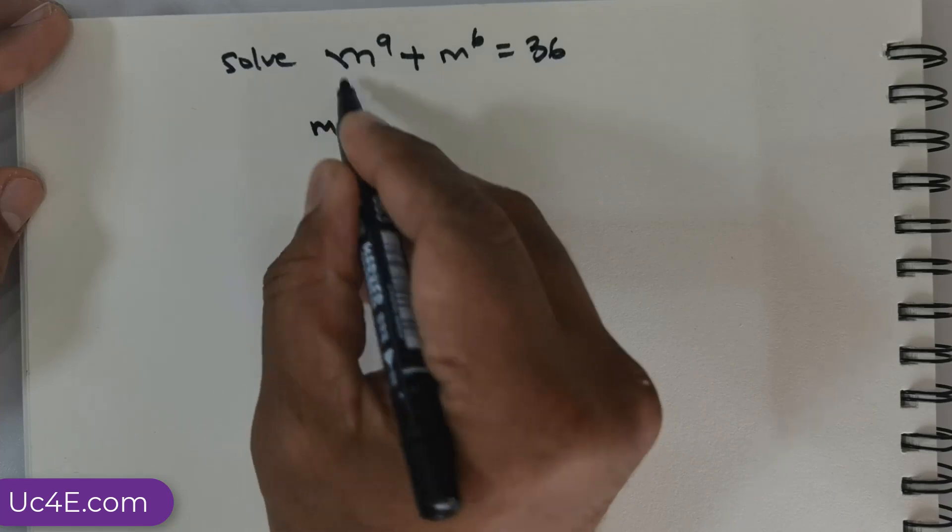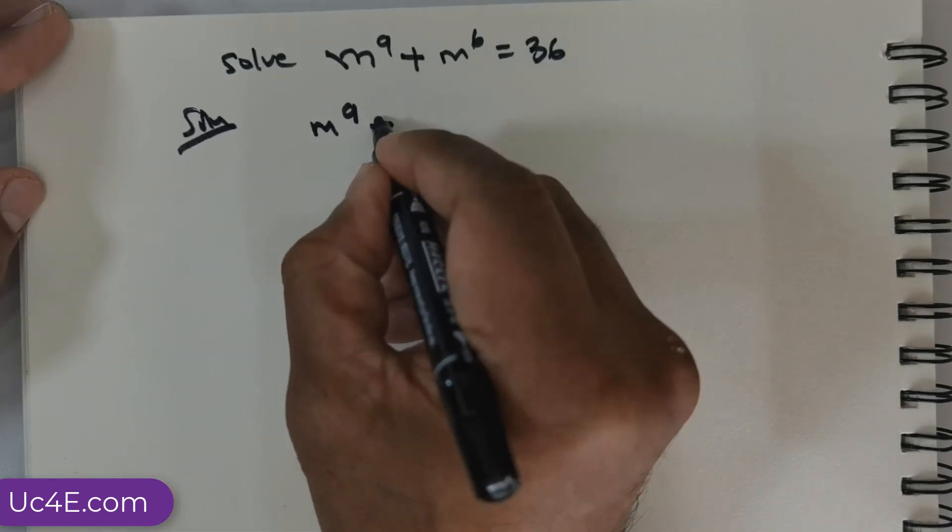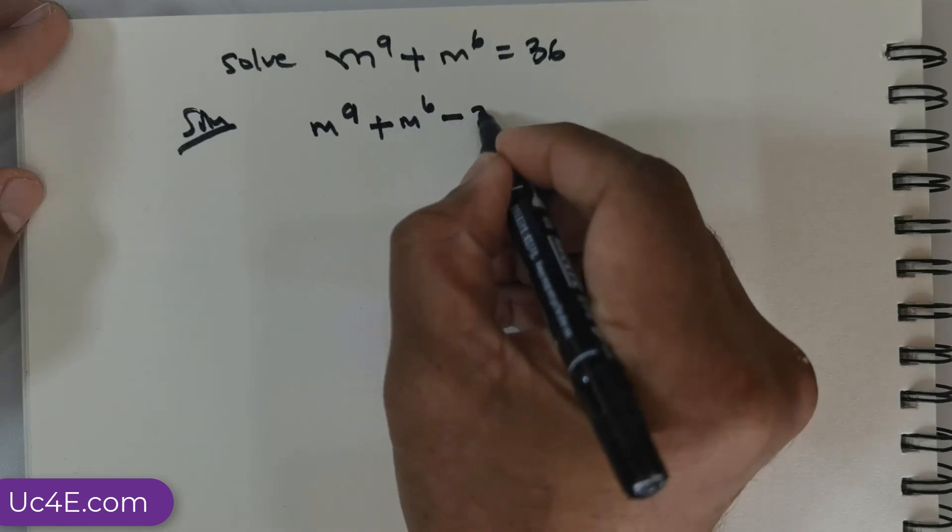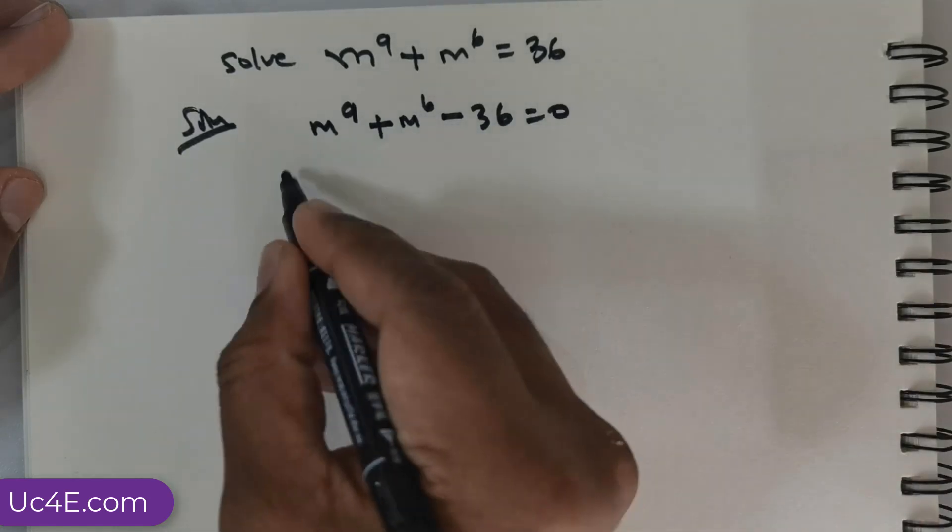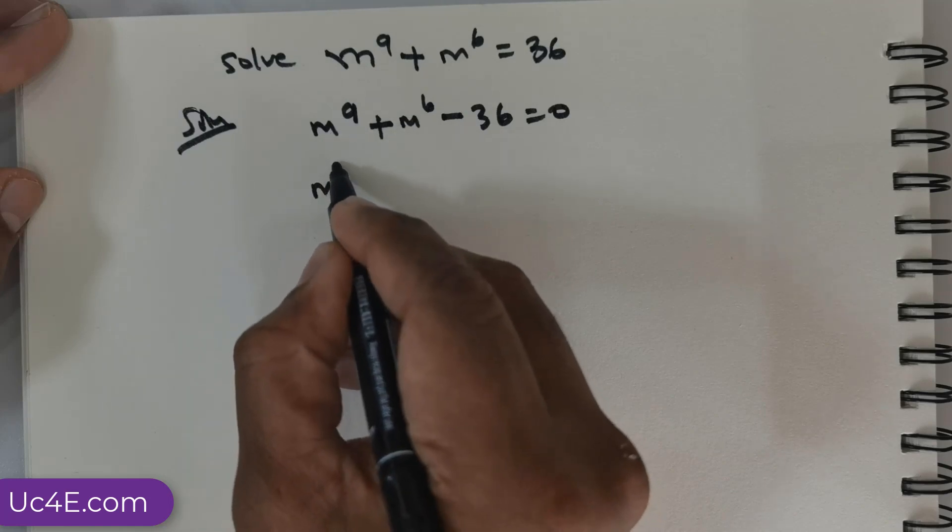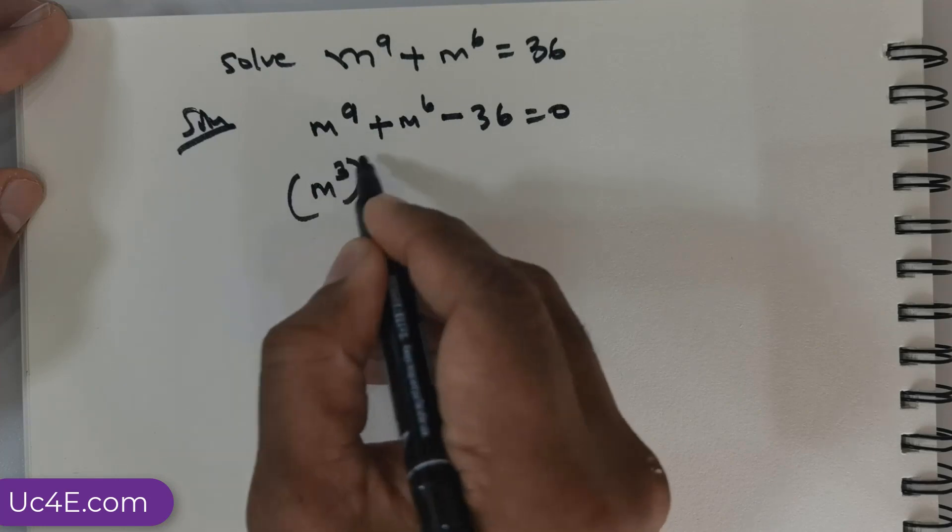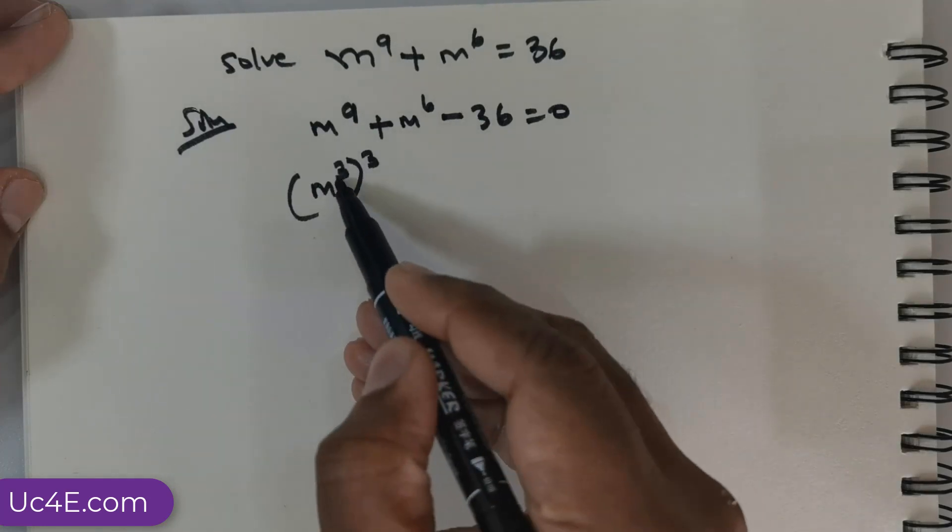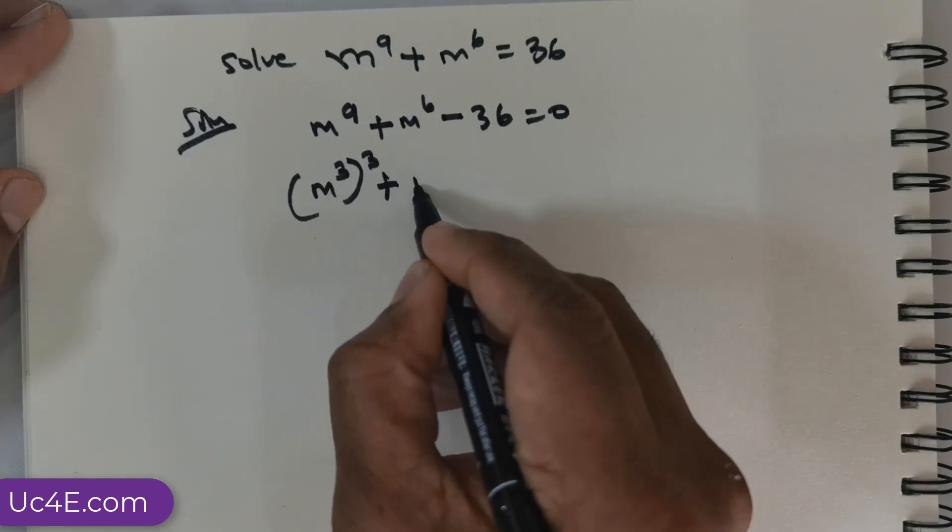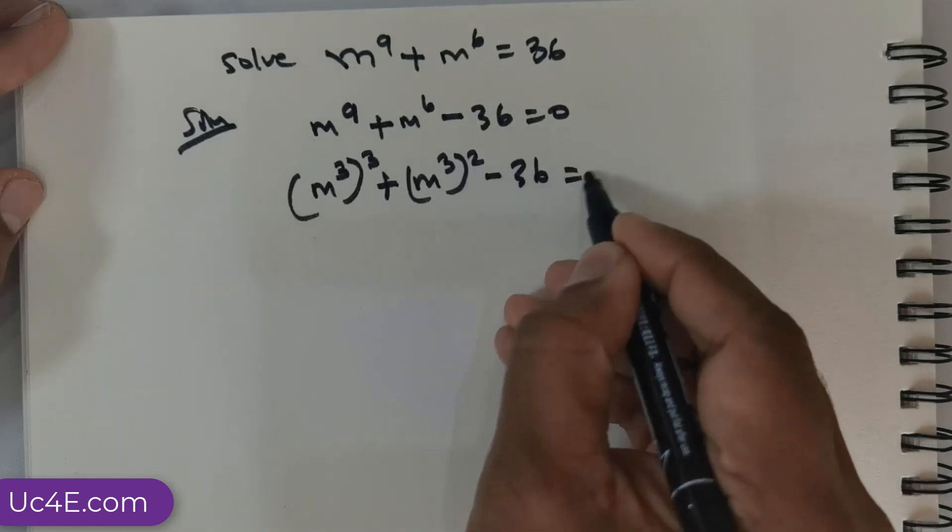Now, I am going to rewrite this as m^9 + m^6 - 36 = 0. Then I will represent m^9 as (m^3)^3, because 3 times 3 is 9. Plus (m^3)^2 - 36 = 0.